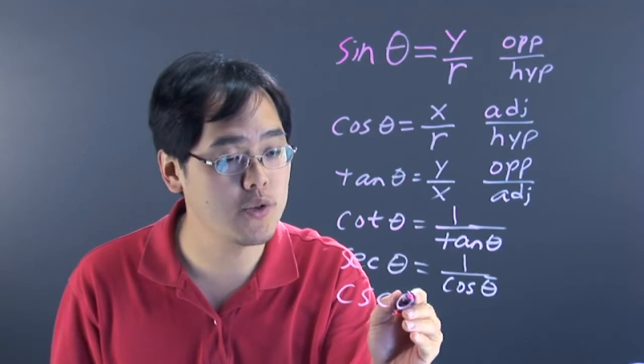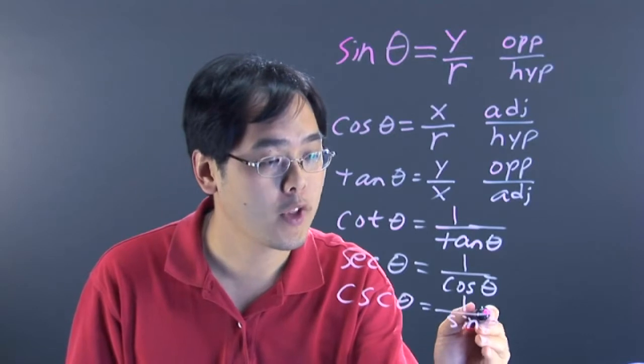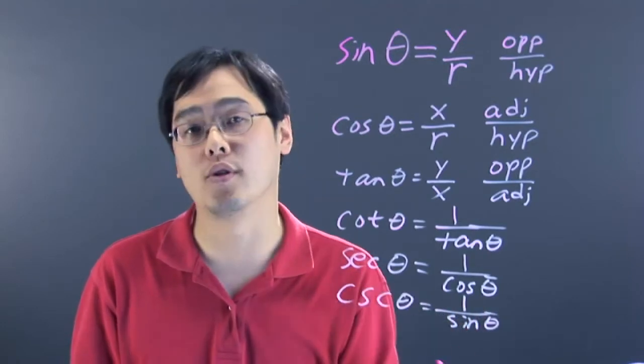And last but not least, you have the cosecant function, and that, by definition, is 1 over sine of theta, which means that cosecant is the reciprocal of sine.